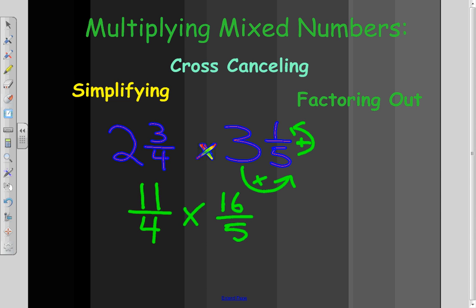Now, we need to go about the next step, which is to simplify, or cross-cancel, or factor out. And basically, what I'm doing is, if I could simplify 16 over 4,